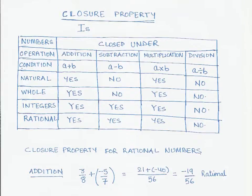Now let us look at the properties of the rational numbers. We will begin our discussion with the closure property. Closure property simply means that given two numbers, a and b, what happens when we add, subtract, multiply, or divide any two numbers of the same type? What is the result? Is the result the same type of number or not?